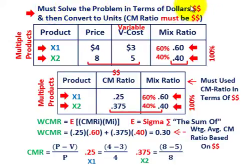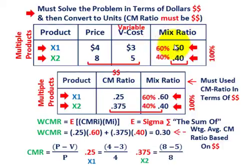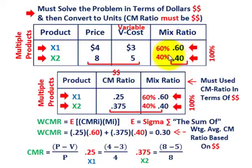We must solve the problem in terms of dollar amounts, then we can convert to units. We're going to have two products: product X1 and product X2. For each product, we need a unit price, a unit variable cost, and the mix ratio — how much of each product we're actually selling. For X1, the mix ratio is 60% or 0.60, and for X2 the remainder is 40% or 0.40. These must sum to 100%.